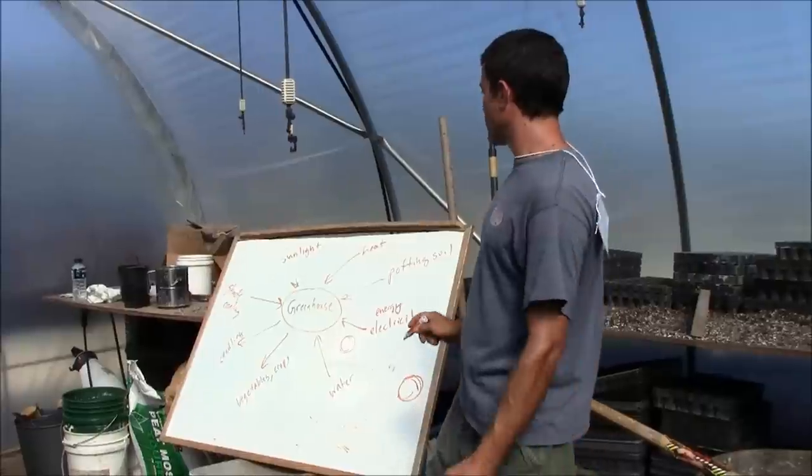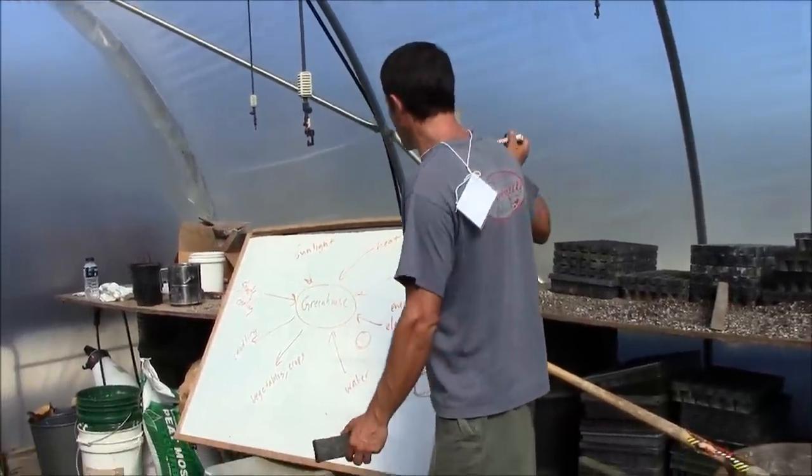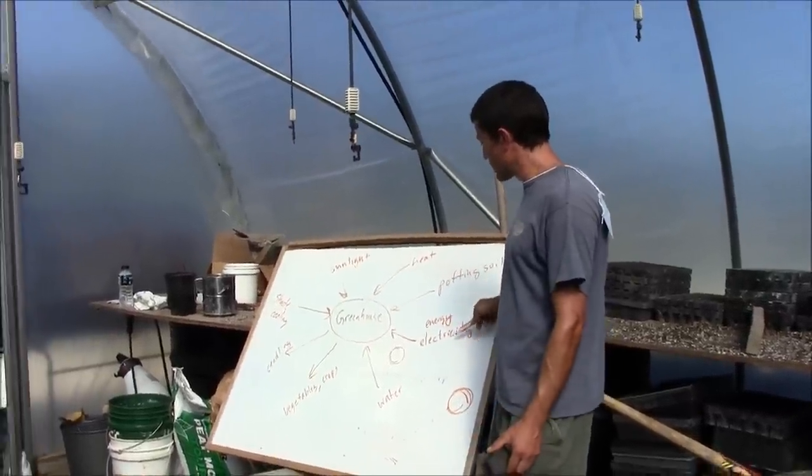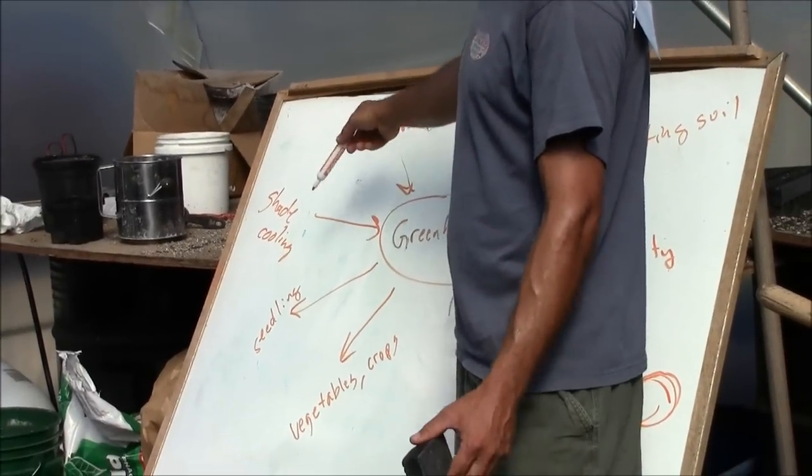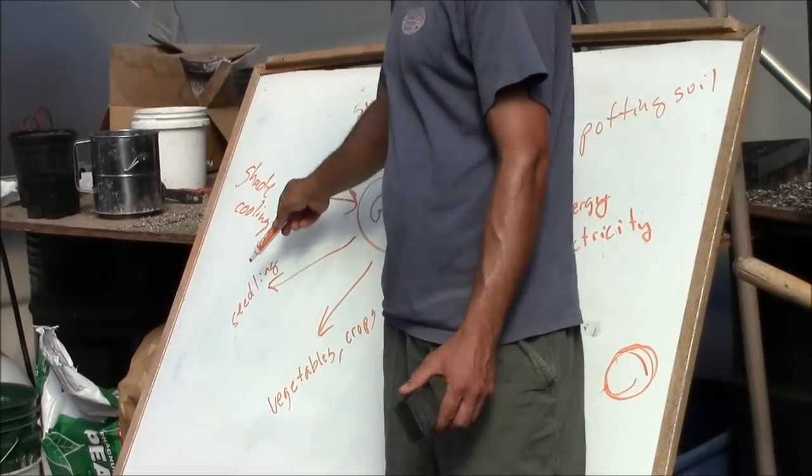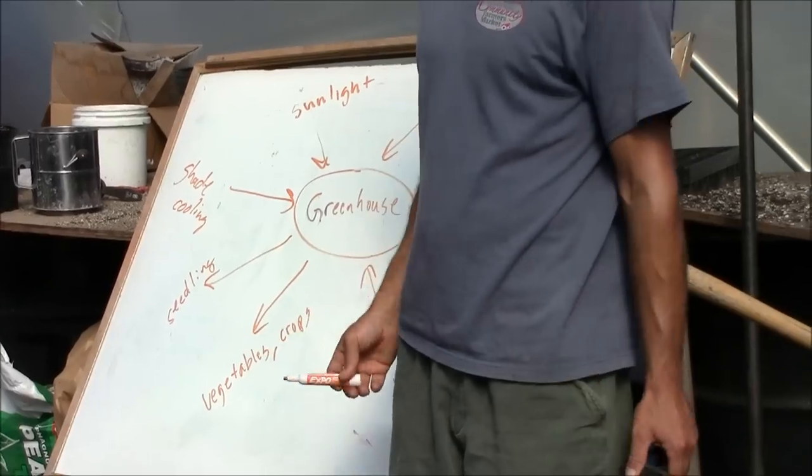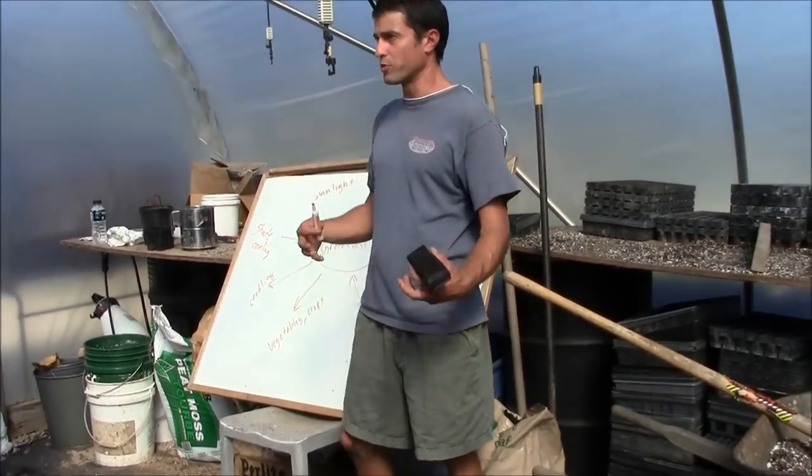For example, one of the examples I've written on this board here is the greenhouse. What are the inputs coming into the greenhouse? You have potting soil, energy and electricity, heat, sunlight, shade, water. And then some of the outputs are seedlings if it's a propagation greenhouse like this one, and then you have vegetables or crops if you're producing food.